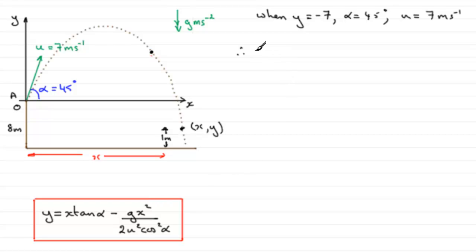So we just need to substitute these values into this equation. So what are we going to get? Well, we've got for Y minus 7 equals X tan alpha, so that's going to be X multiplied by the tan of 45 degrees.